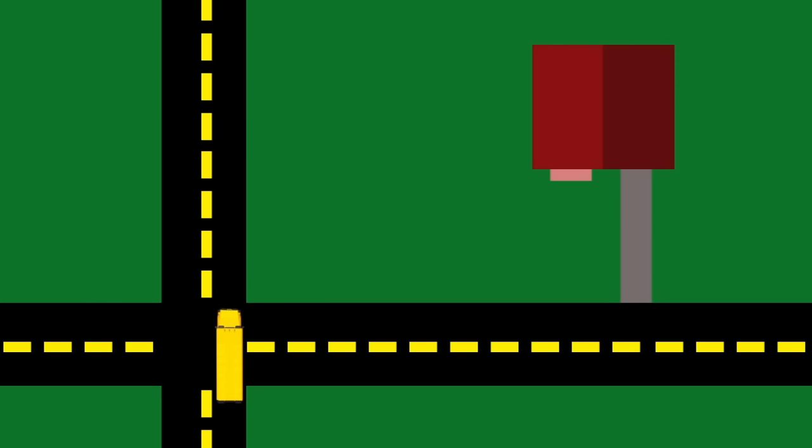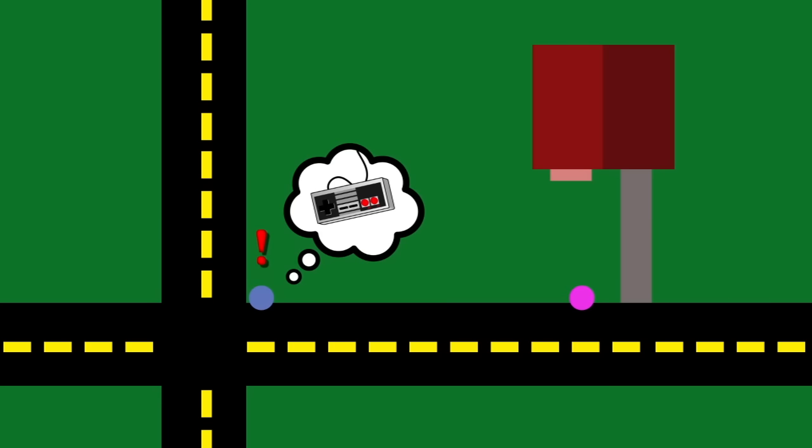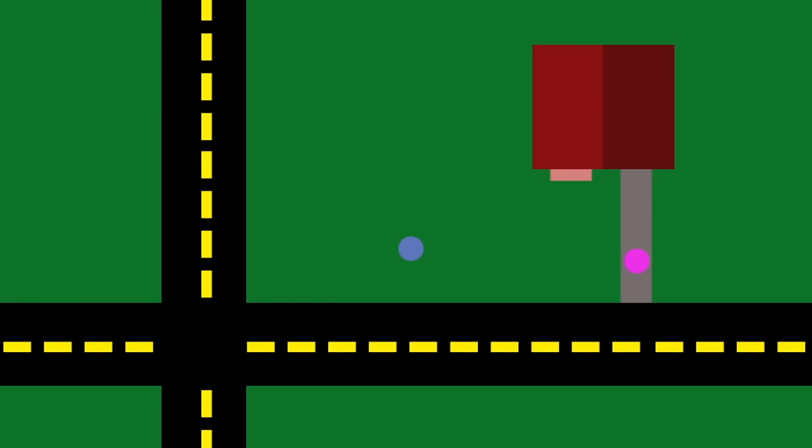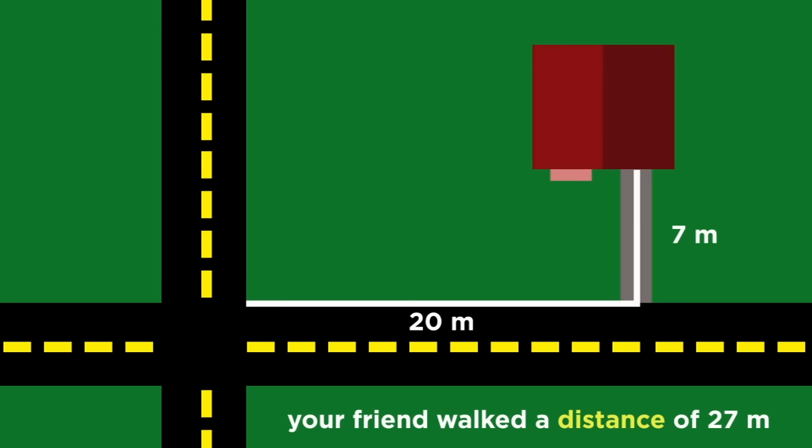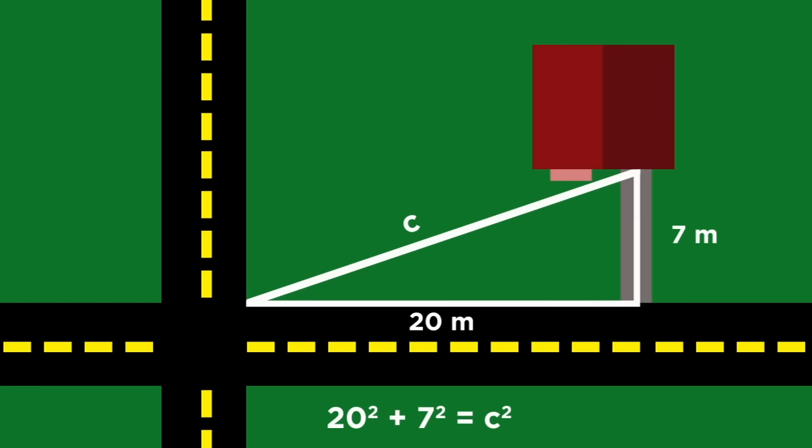Let's say you and your friend get dropped off by the school bus at this intersection, and your house is here. Your friend begins to walk down the street and up the driveway, like a normal person, but you find yourself so overcome with excitement to play video games that you decide to plow through the yard in a straight line to the door. Your friend has to walk twenty meters down the street, and seven meters up the driveway, for a total of twenty-seven meters. So, using the Pythagorean theorem, we find that you only had to walk about twenty-one point two meters, and you probably got there a little sooner.